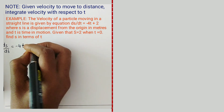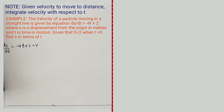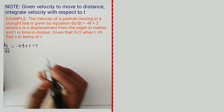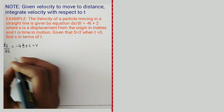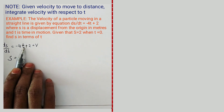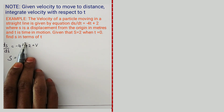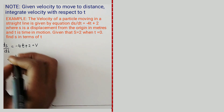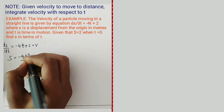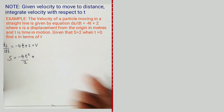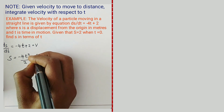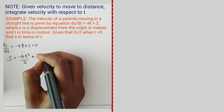We know that ds/dt = −4t + 2 represents velocity. To find distance we integrate: t has a power of 1, add 1 to get t², so −4t² divided by 2. Then 2 has a power of 0, add 1 to get t¹, so +2t. Plus the constant of integration C. Simplifying: S = −2t² + 2t + C.